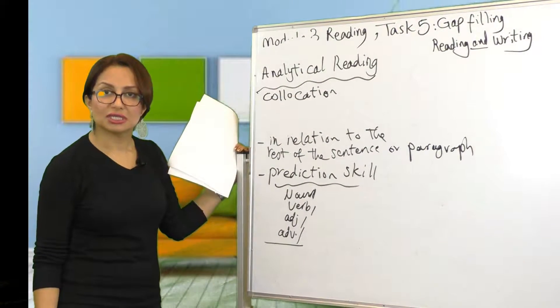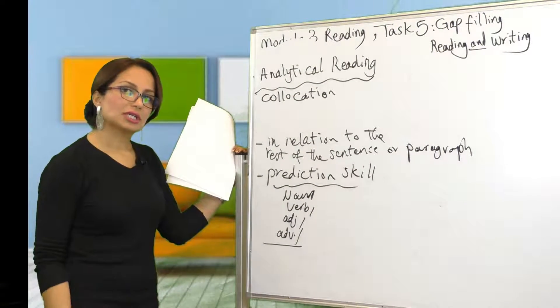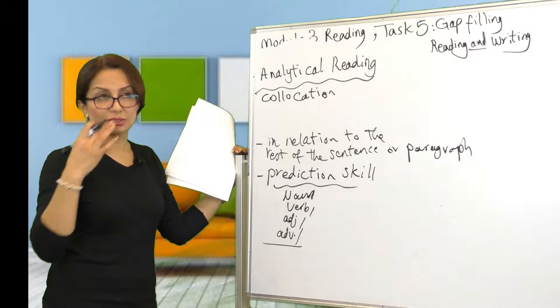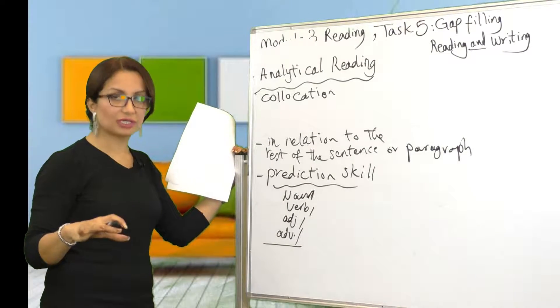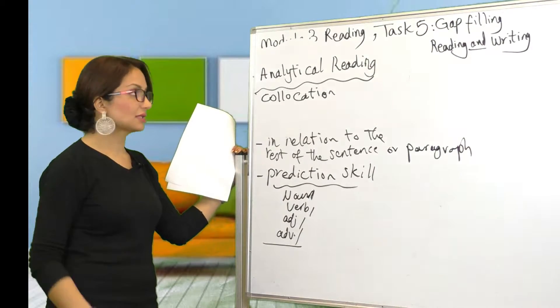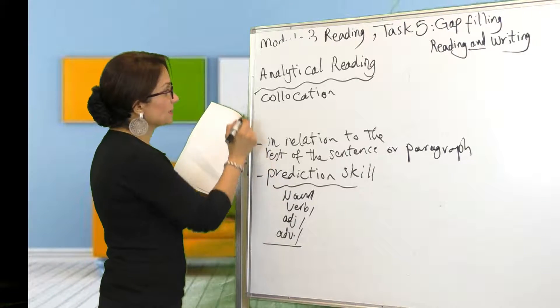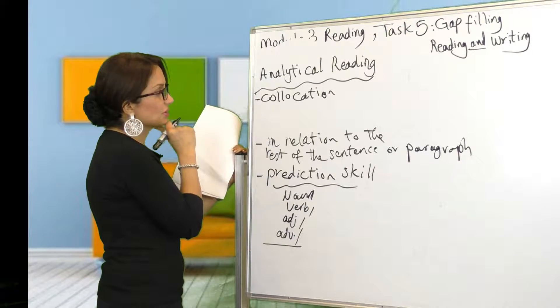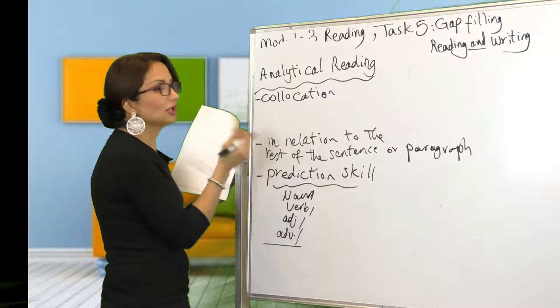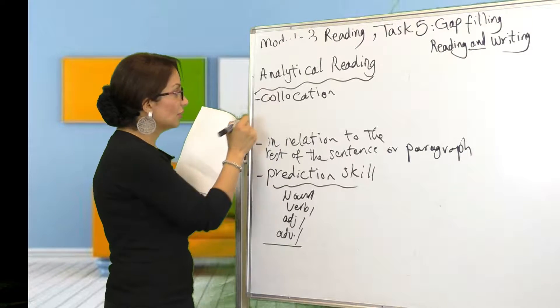When you do analytical reading, please pay attention to collocation. For example, if you're given passages about education, how many collocations can you get? Collocation means two to three words that go together and make sense, make meaning in the given context.